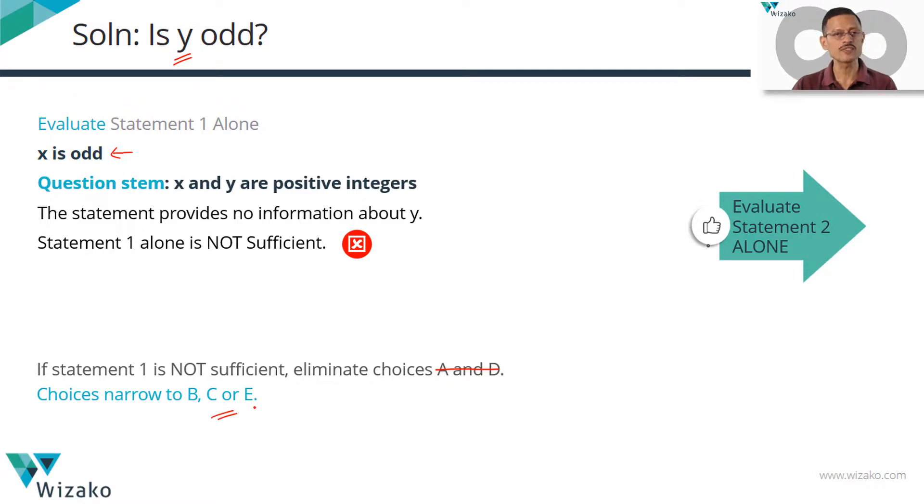Let's rule out choices A and D. What we have narrowed it down to is choices B, C or E.